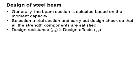The design of a steel beam generally begins with selecting a steel section based on the moment capacity. First, select a trial section and carry out the design check so that all the strength components are satisfied. In principle, the design resistance should always be at least greater than the design effect. If this does not comply, you will have to choose another section and carry out the design check again.